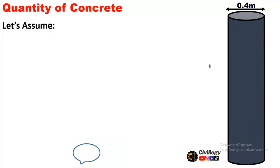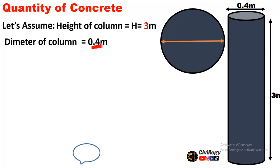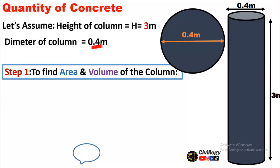Let's assume we have a circular column with a height of 3 meters and a diameter of 0.4 meters, for which we are going to calculate the quantities. This is the cross section of the column having diameter 0.4 meters. The first step to calculate the quantities will be to find the area and the volume of this column. The area of a circular object is equal to pi r squared.